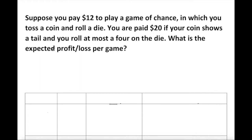So the expected profit is the same as the mean. There is actually a formula for it: the expected profit E(x), same as the mean, is equal to the sum of the discrete random variable x times the probability of x.